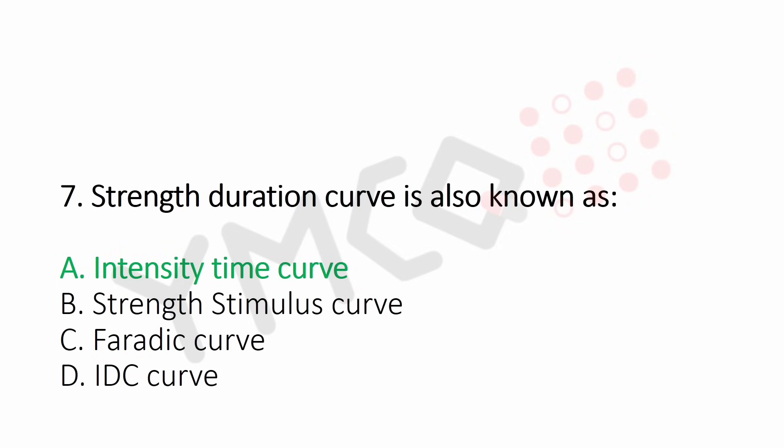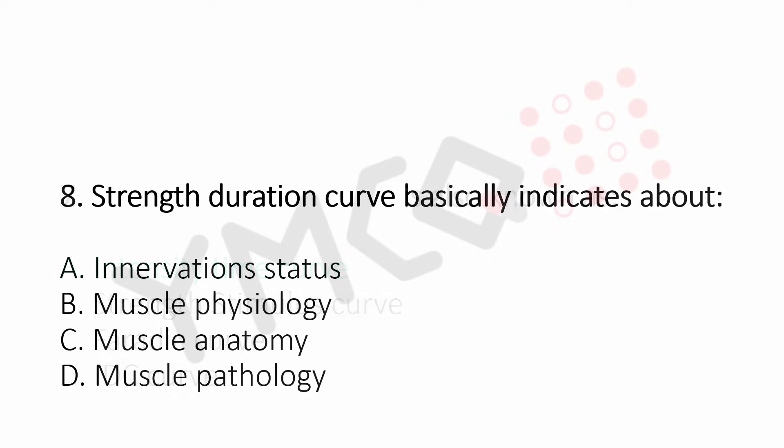Question 8: The strength-duration curve basically indicates about — Option A: innervation status, Option B: muscle physiology, Option C: muscle anatomy, Option D: muscle pathology. The answer is Option A: innervation status.